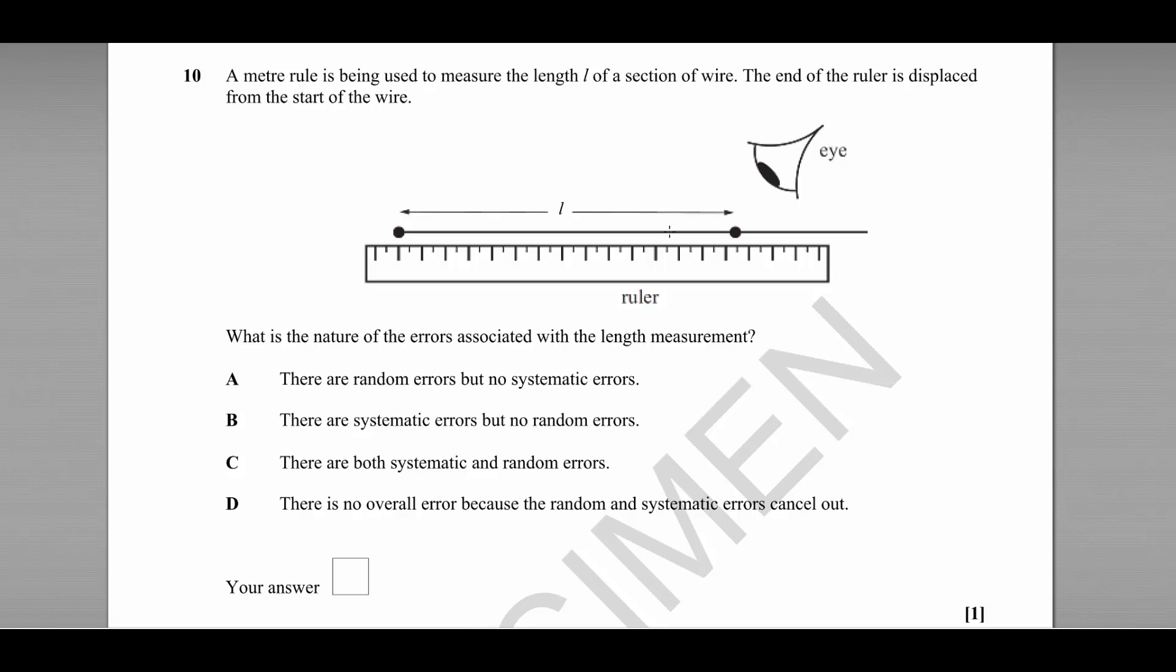Question number 10 is about experimental errors and the difference between random errors and systematic errors. The thing to remember here is what these mean.